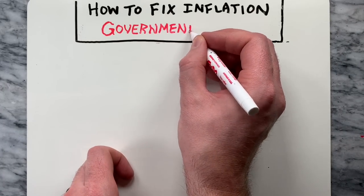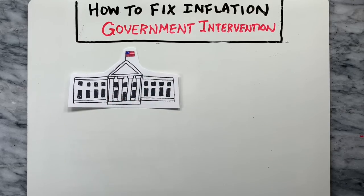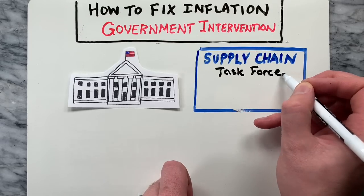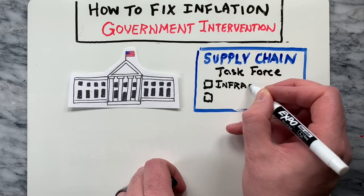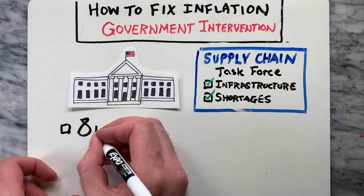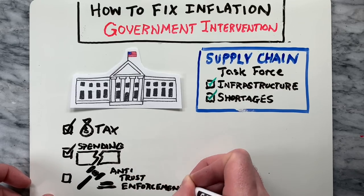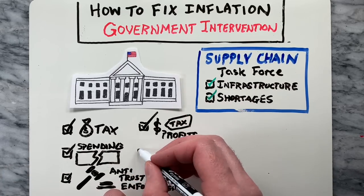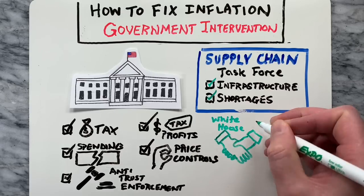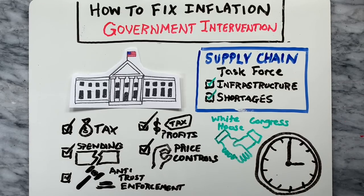Others believe that the government can do more to help with inflation. The White House and President Joe Biden have taken some measures to try to address inflation, such as rolling out a supply chain task force to address issues such as infrastructure at ports and shortages in essential products like semiconductors. As inflation increases, the federal government could look into raising taxes, cutting spending, better antitrust enforcement, taxes on corporate profits, and price controls, but this would require White House and bipartisan cooperation in Congress. Ultimately, these fixes for inflation are just going to take some time.